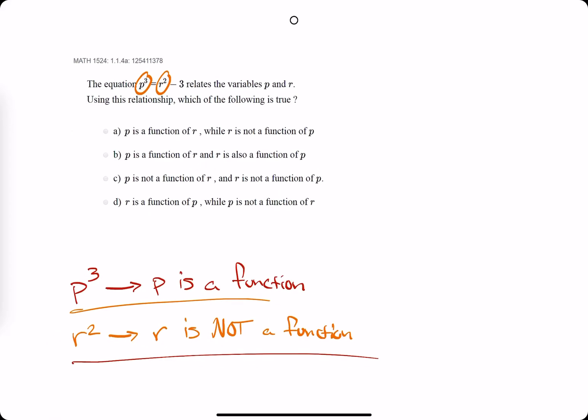And so from what we know, p cubed is going to say that p is a function and r squared indicates that r is not a function. So right away we can probably go ahead and say that the answer is going to be a. So that's kind of nice, right?